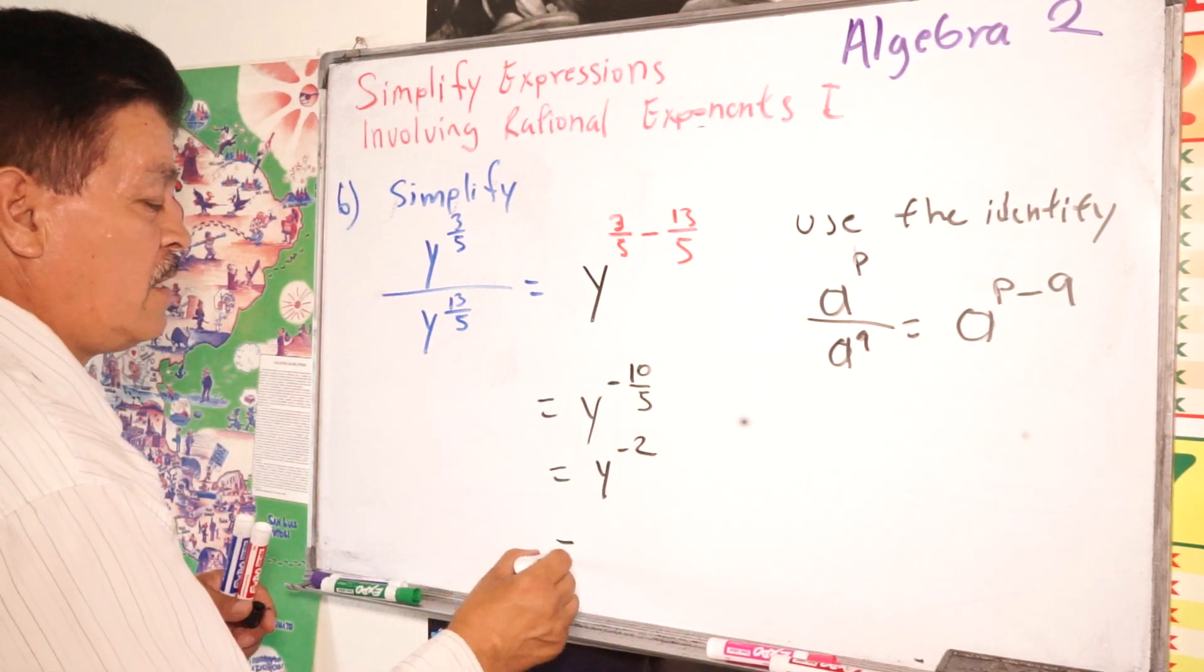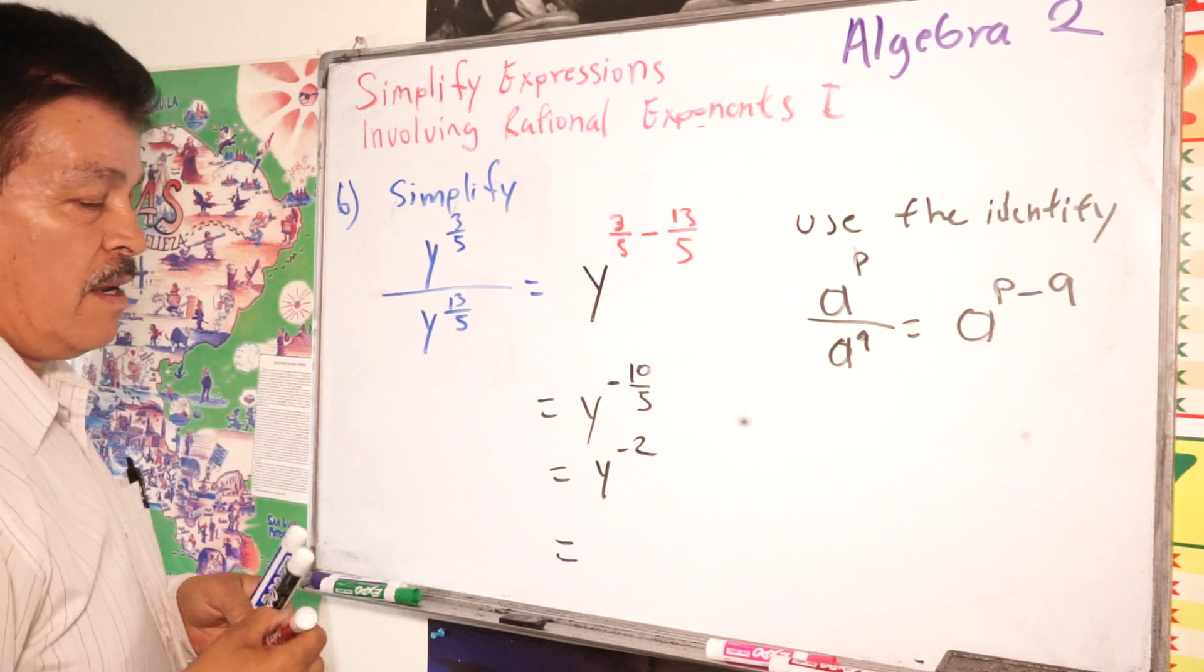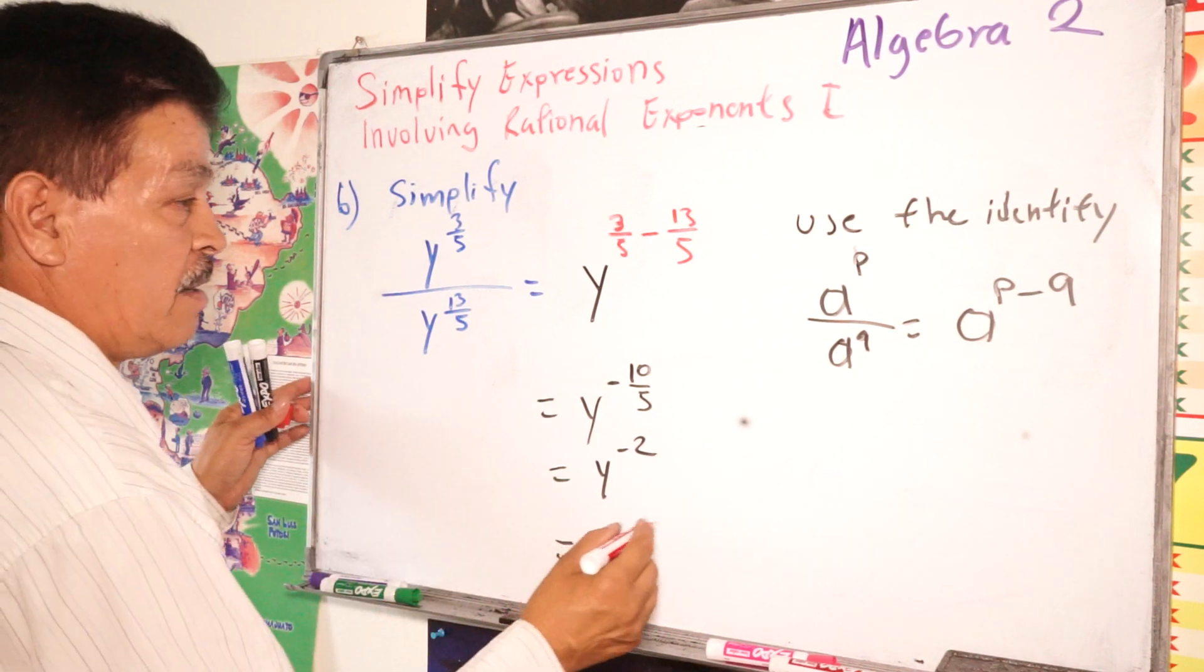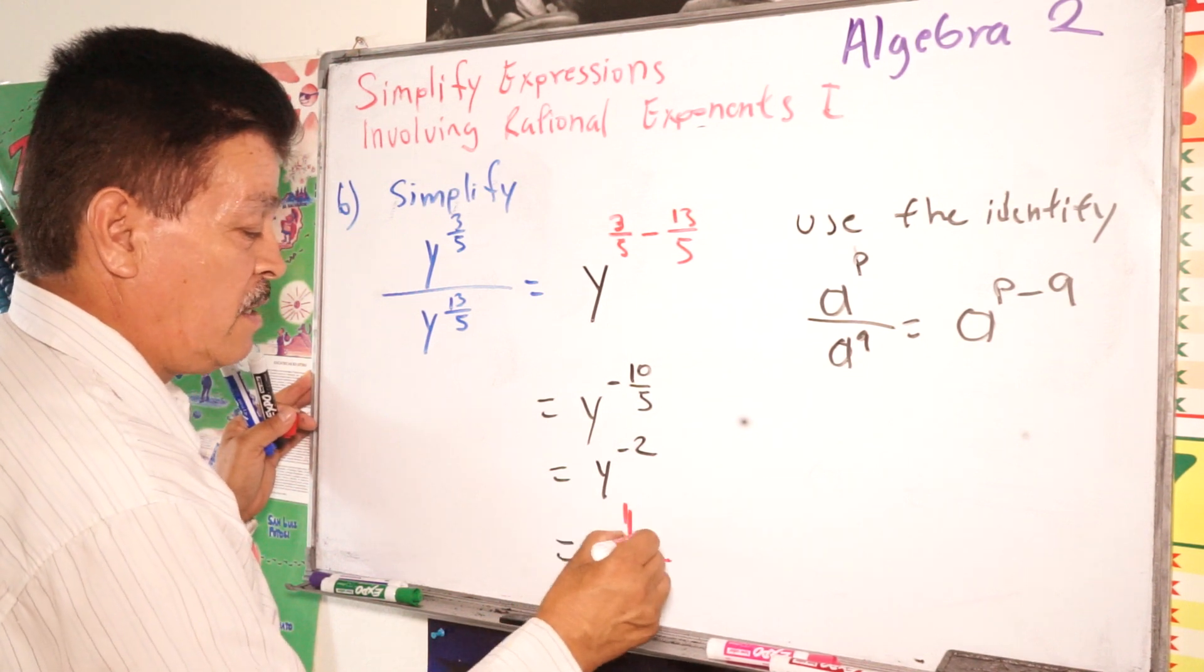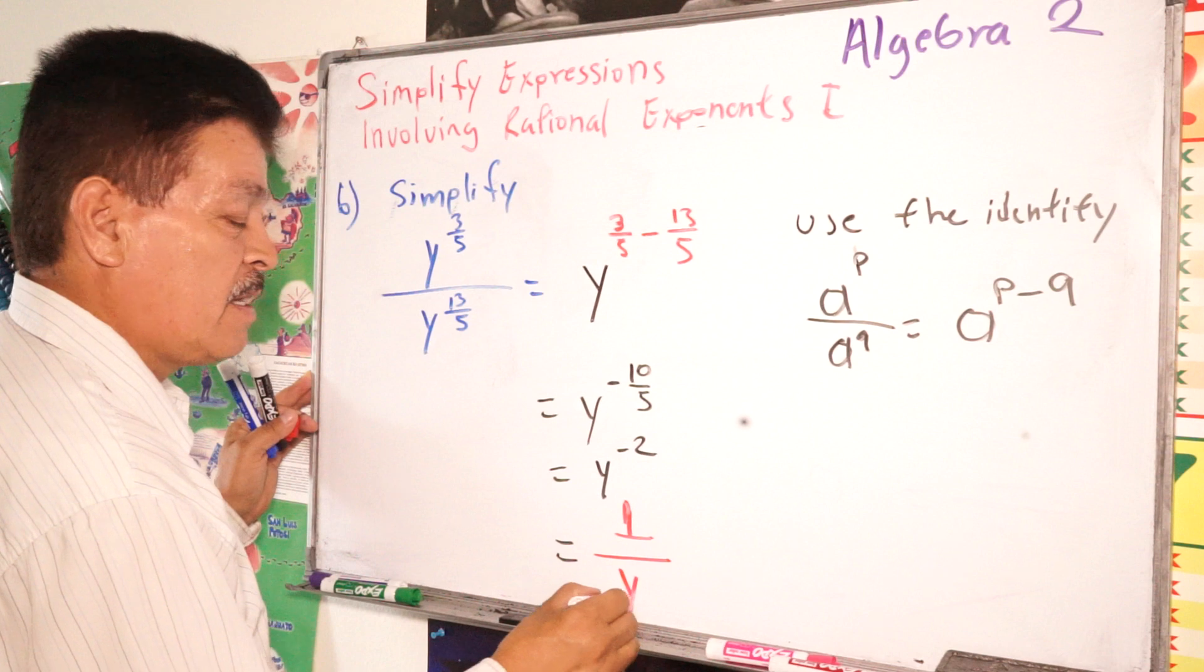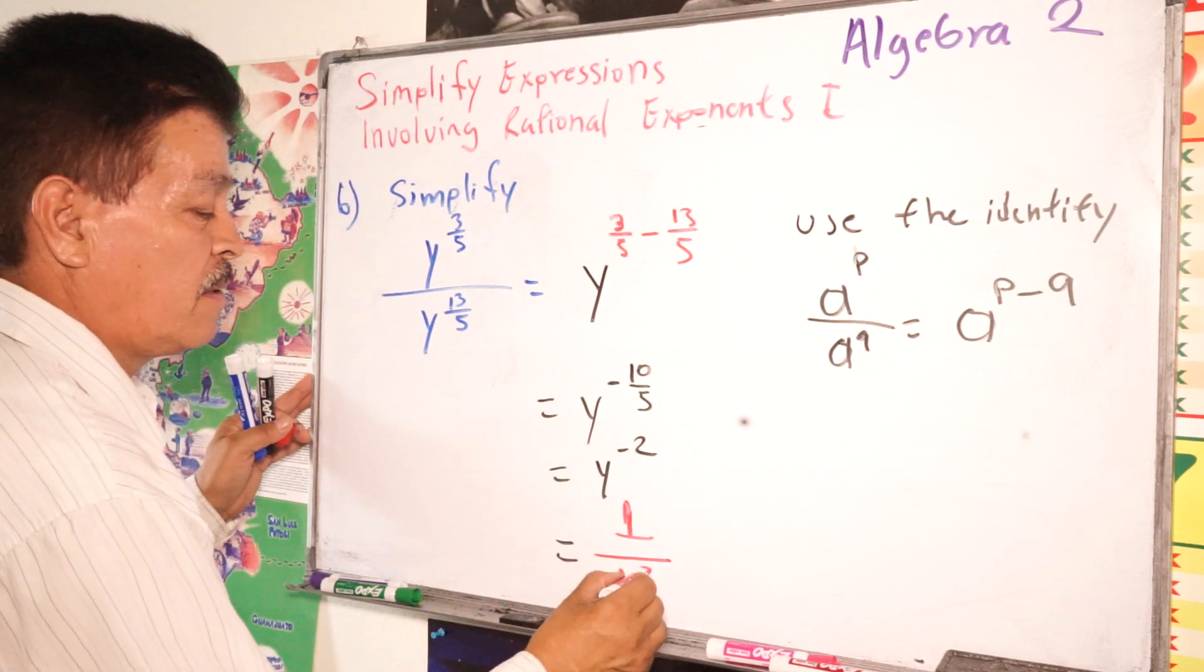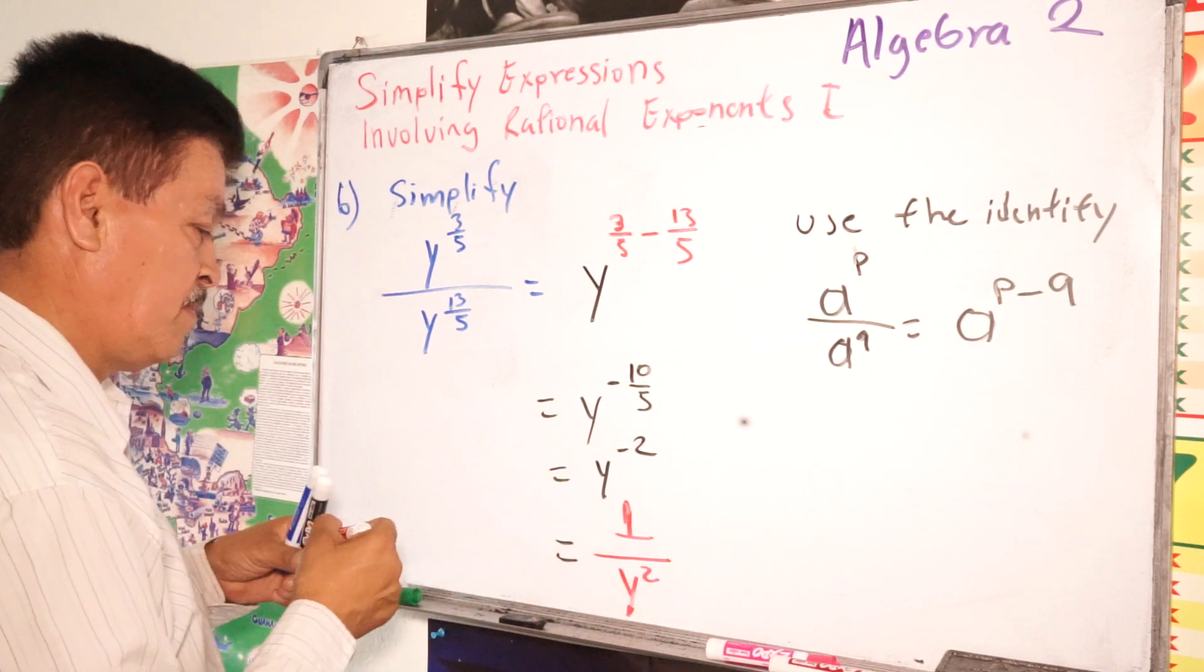So our answer here, here is, will be, remember the rule that I write it for you. This will be 1, 1 divided by Y to the second power, yeah? This is our answer in this problem.